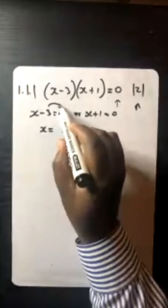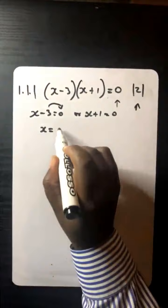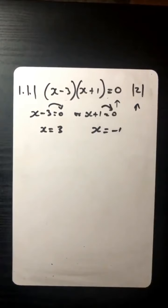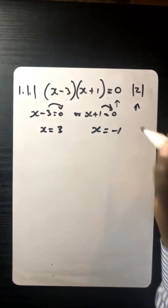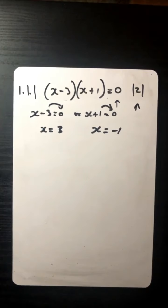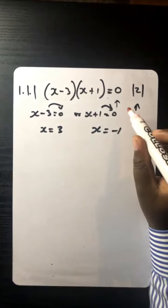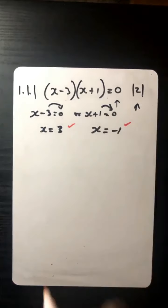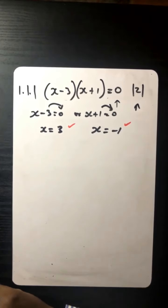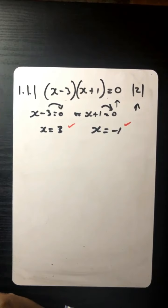When you transpose, you change the sign — therefore x equals 3, or x equals negative 1. For this type of problem you are most likely to score one mark for each x value, giving you your two marks. Is that clear and straightforward?